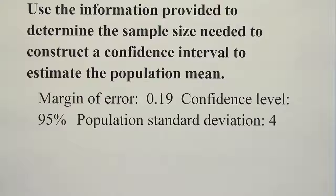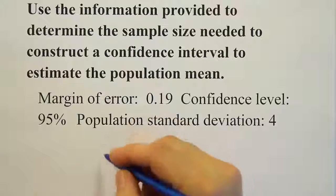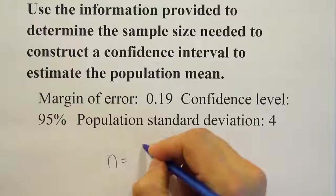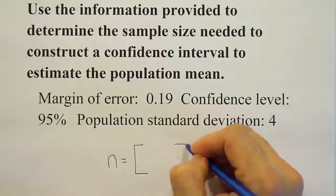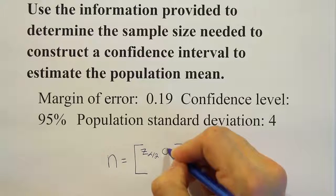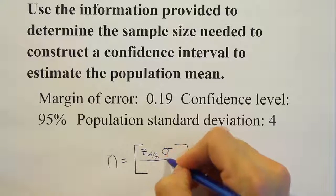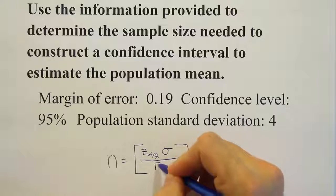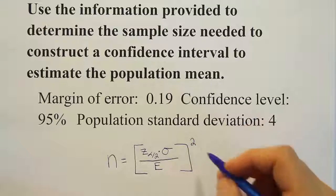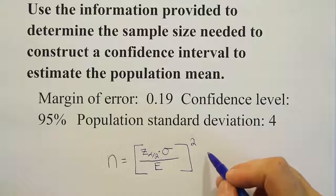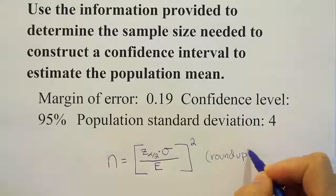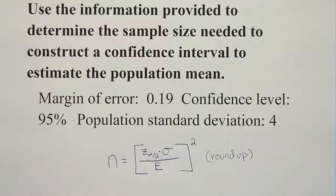The formula for the sample size when estimating the population mean is: z_α/2 times sigma (the population standard deviation) divided by the margin of error, and all of that is squared. There's also an important detail — we must always round this up if there's any kind of decimal.